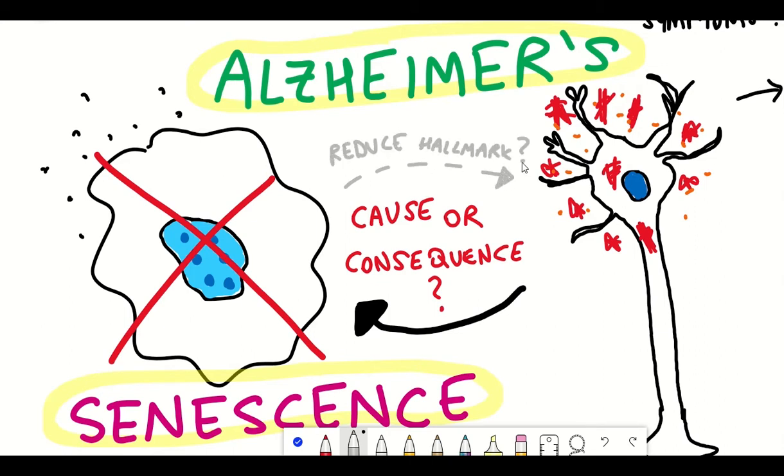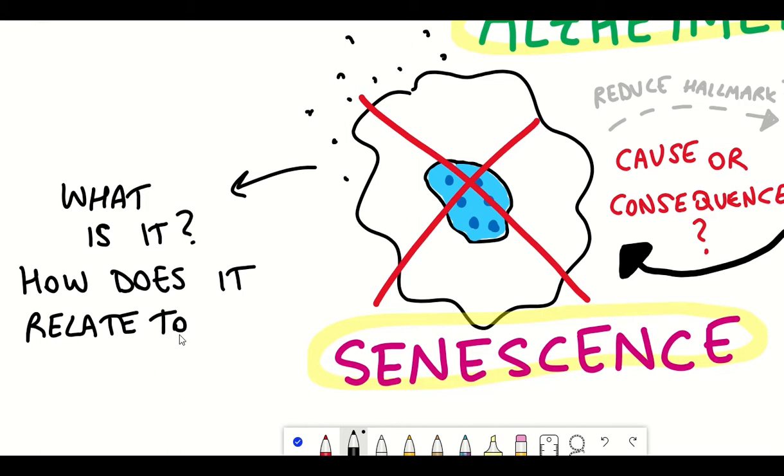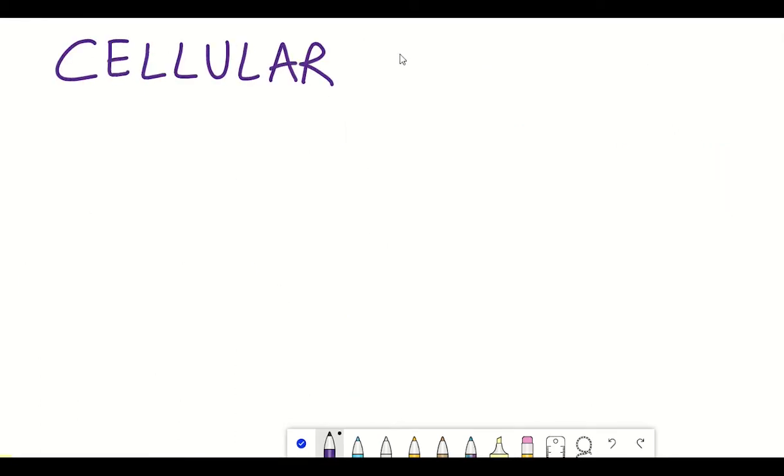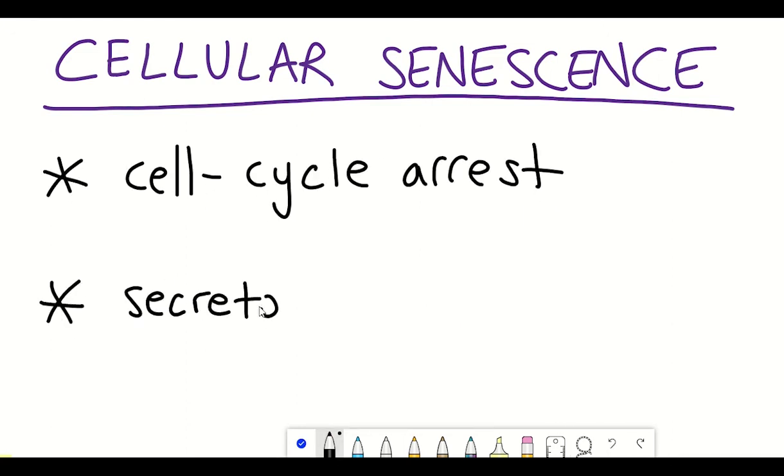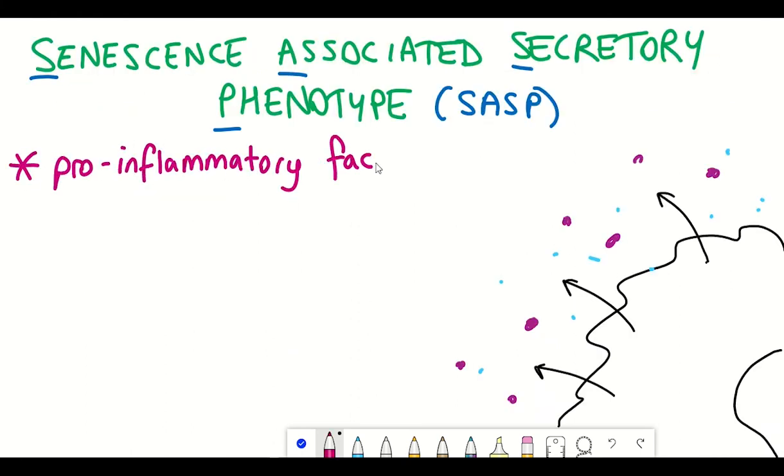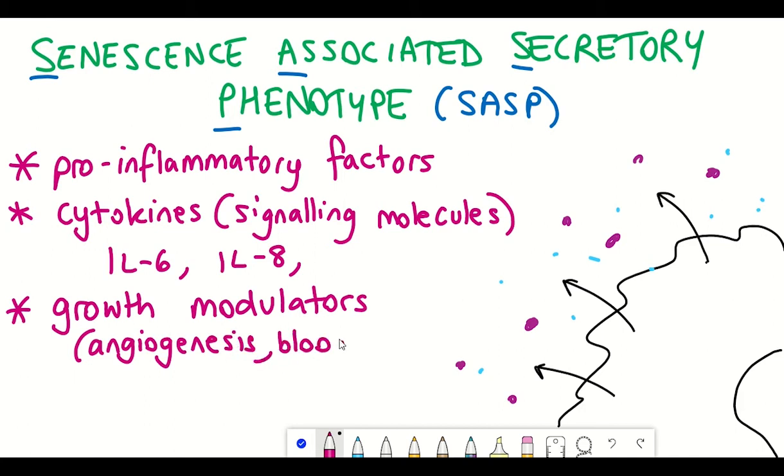Before we go any further we need to recap what is cellular senescence. Cellular senescence is best described through its two major hallmarks. The first is the arrest of the cell cycle so the cell stops dividing. The second major hallmark is the secretion of various factors including signaling molecules and inflammatory factors, referred to as the senescence associated secretory phenotype.